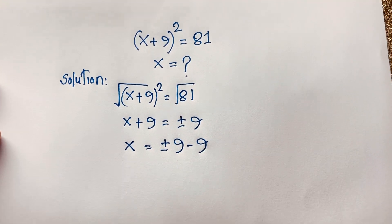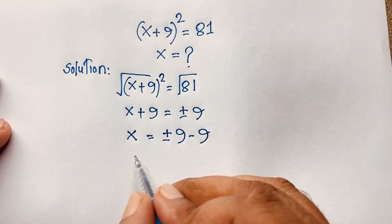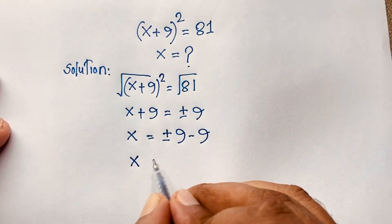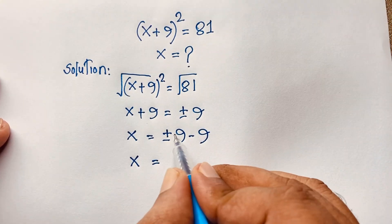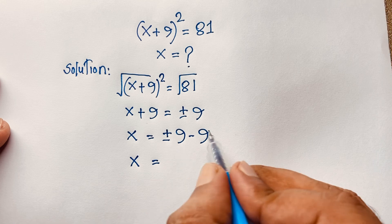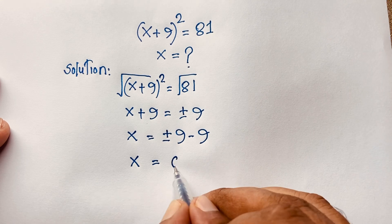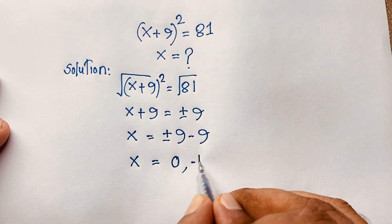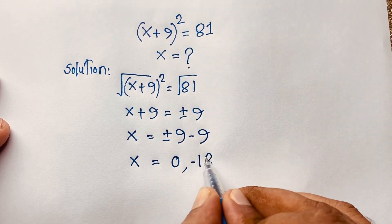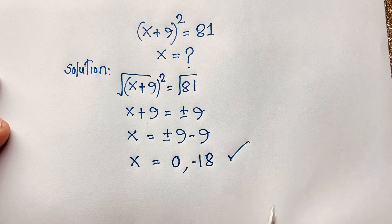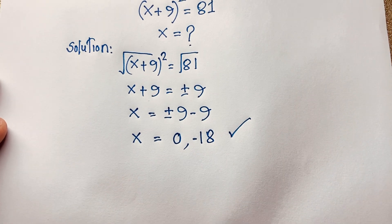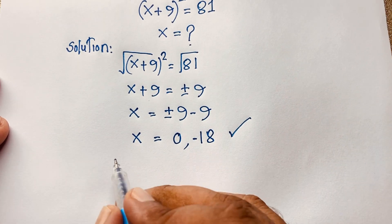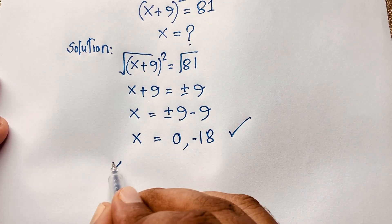Now you can easily find x. If I take positive 9, it will be 0. Then if I take negative 9, it will be minus 18. So this is our final answer from this method.